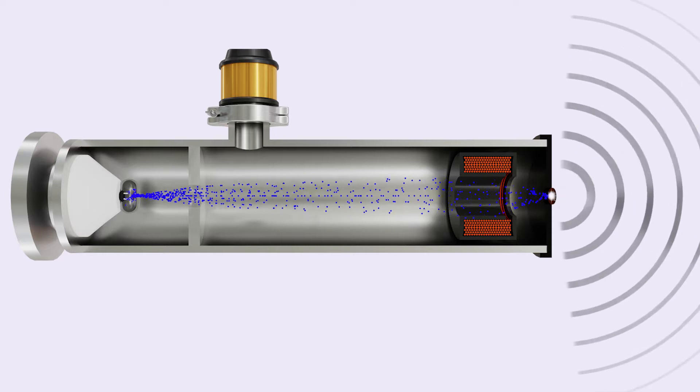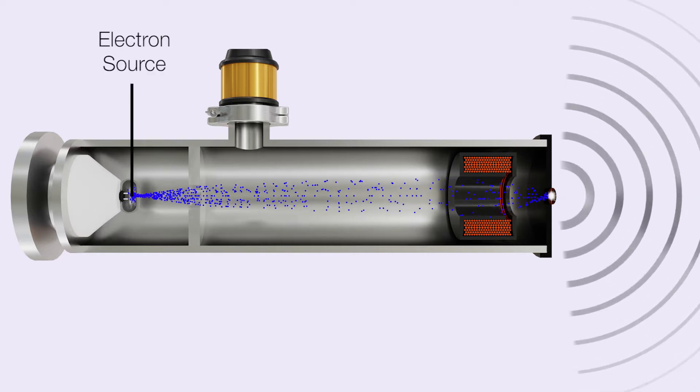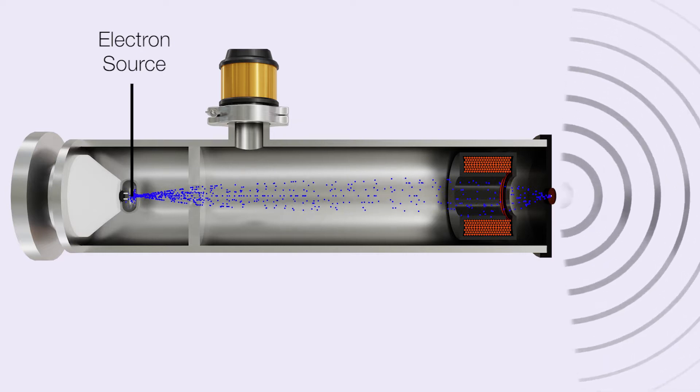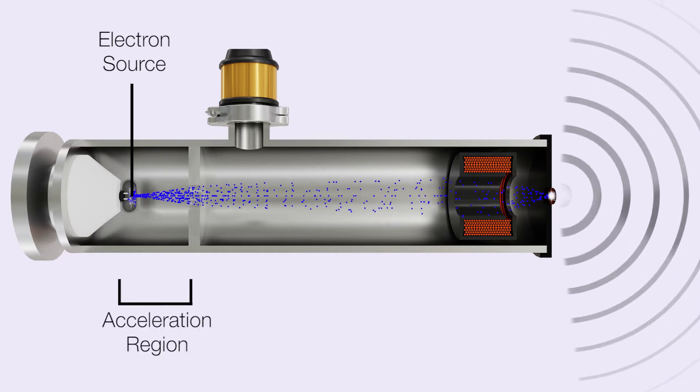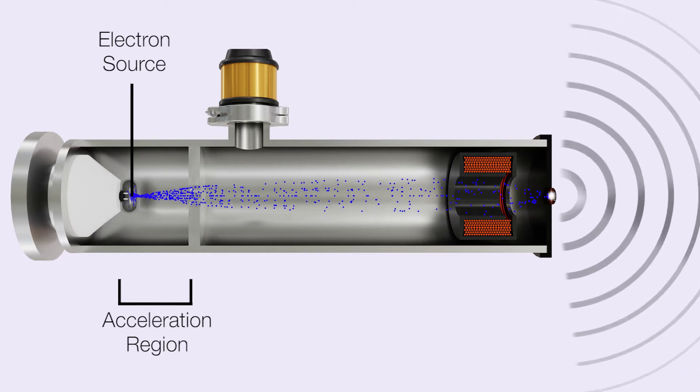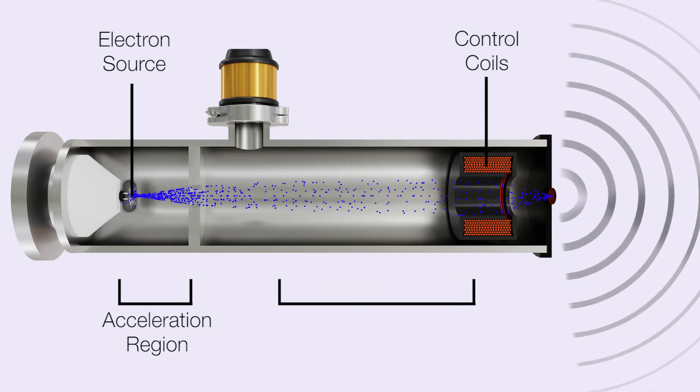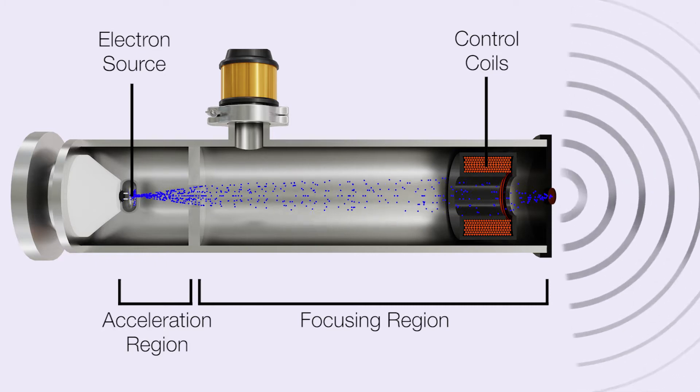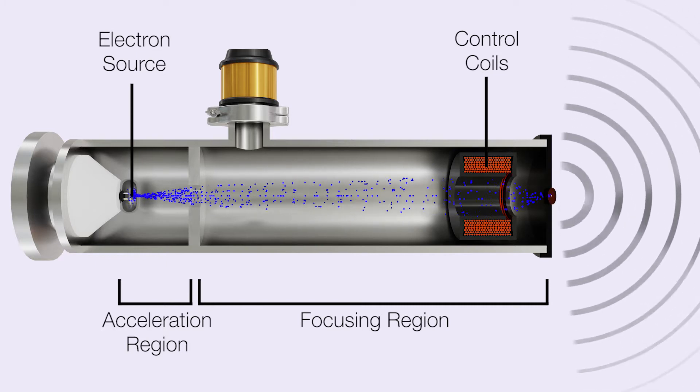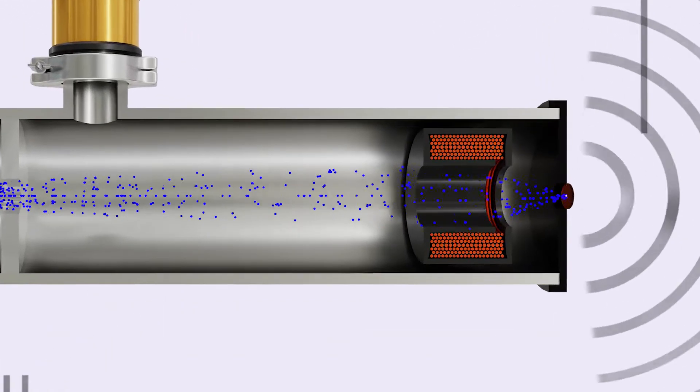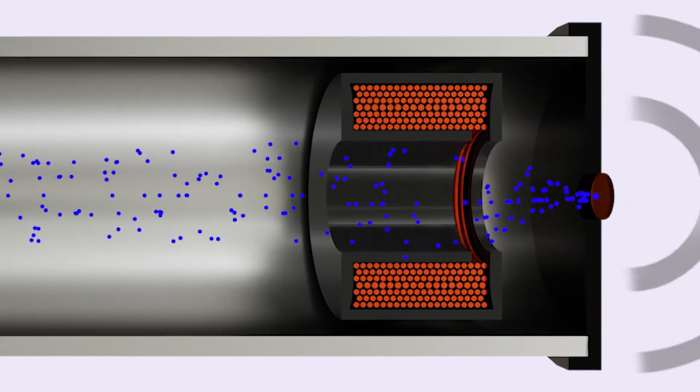An electron source supplies the electrons. High voltage accelerates them to 80% of the speed of light, and control coils squeeze them into a highly focused point where they collide with the target and their energy is converted into x-rays.